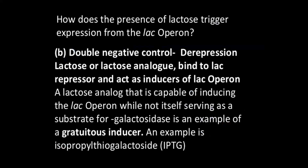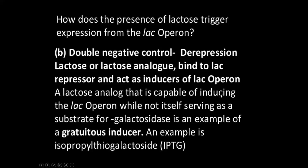The presence of lactose or any other inducer is responsible for triggering the expression of the lac operon. There is a double negative control — as mentioned earlier, double negative control leads to a positive control. So there is derepression: lactose or a lactose analog binds to the lac repressor and acts as an inducer of the lac operon. Whenever there is lactose or IPTG present, it is responsible for enhancing the expression.